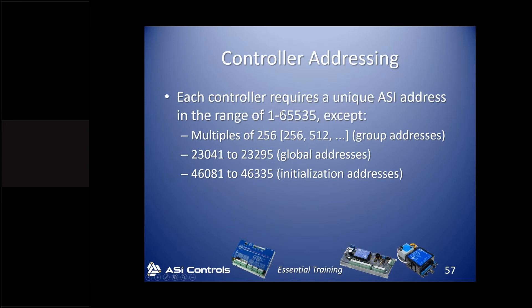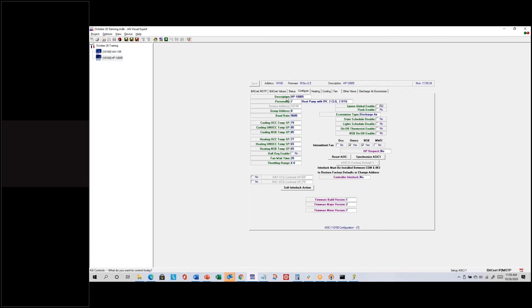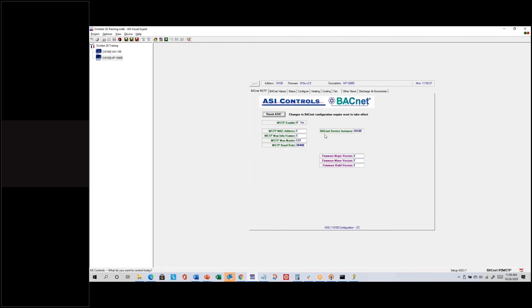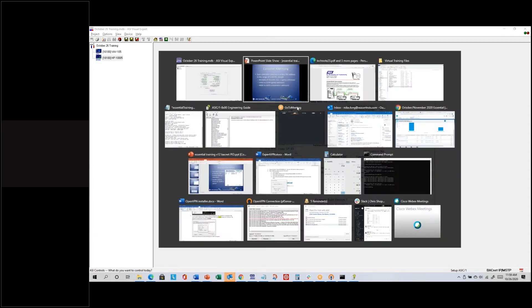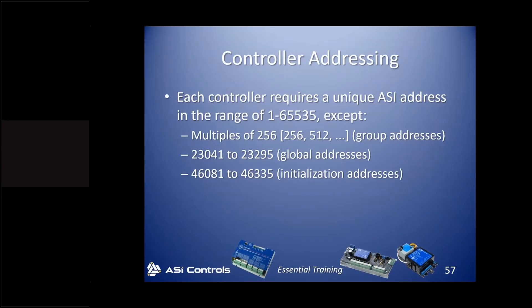Controller addressing — this is for the ASI address as opposed to the BACnet address. In ASI Expert, the ASI address is shown on the Configure tab as the device address, which is different from the BACnet address called the BACnet device instance. It's grayed out because there are only certain times you can actually change it. For the ASI address, you're limited to addresses between 1 and 65,000, with some exceptions: multiples of 256 are not allowed — those are reserved for group addresses used to change settings in a group of controllers with one command.